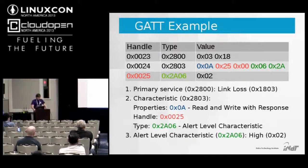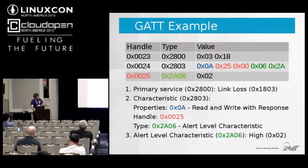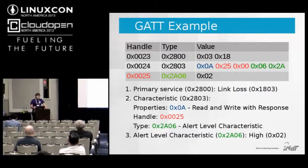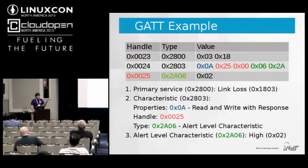At handle 0x24, UUID 0x2803 is a characteristic declaration. The first byte indicates the characteristic's properties — for this characteristic, you can read the value and write with response. The Attribute Protocol provides two write mechanisms: one with a response and one without; this characteristic supports only write with response. The next two bytes indicate the handle of the value attribute, which is at handle 0x25, and the last two bytes indicate the UUID of the characteristic.